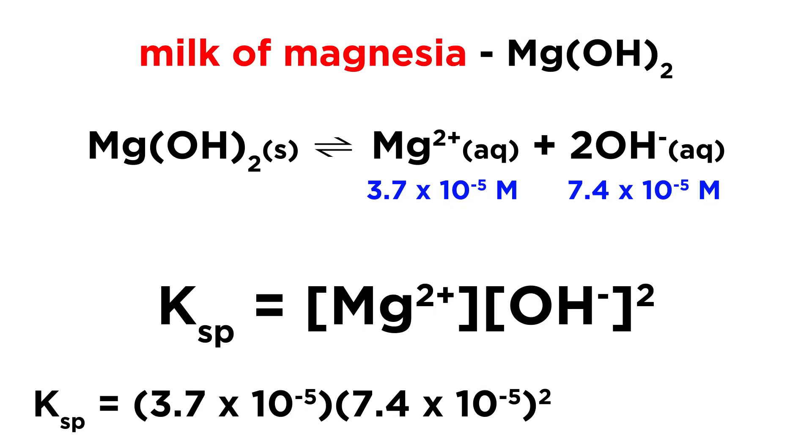So all we need to do is plug these two concentrations into the expression, evaluate, and we will get 2.0 times 10 to the negative 13 for Ksp, which will be a unitless constant, just like other equilibrium constants.